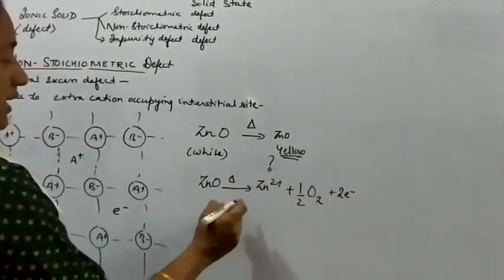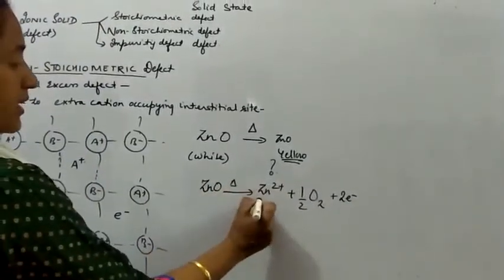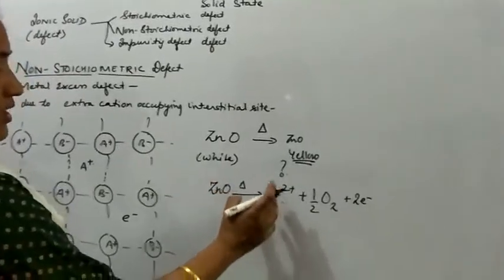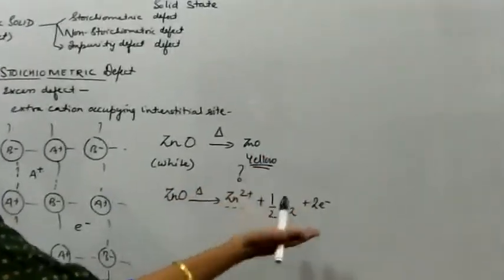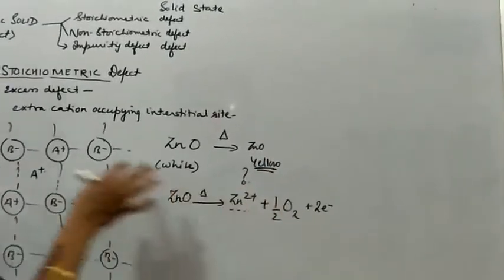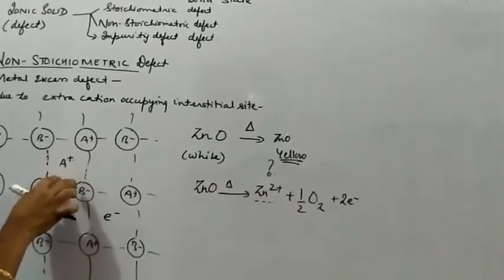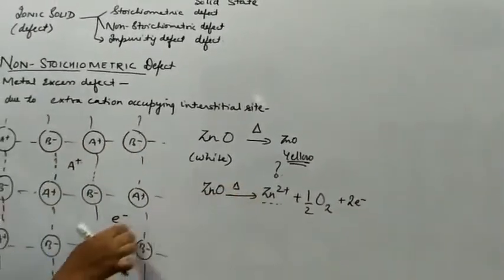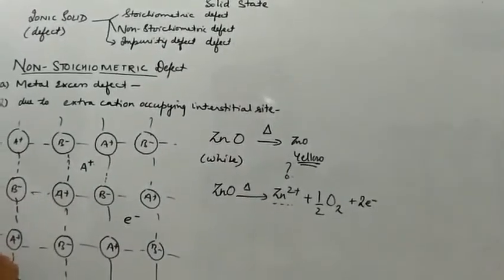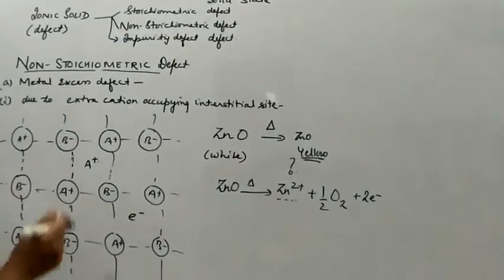When this compound is heated, it gives Zn2+, a metal atom which loses electrons. This zinc ion occupies the interstitial site, and the two electrons released also occupy a nearby interstitial site to maintain electrical neutrality.